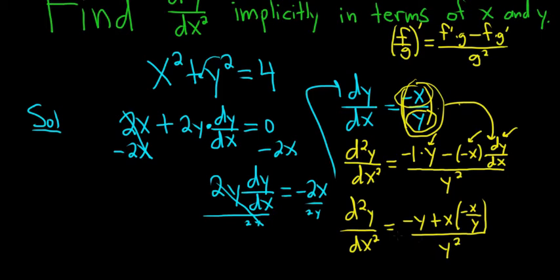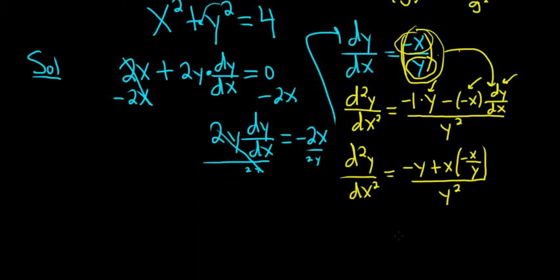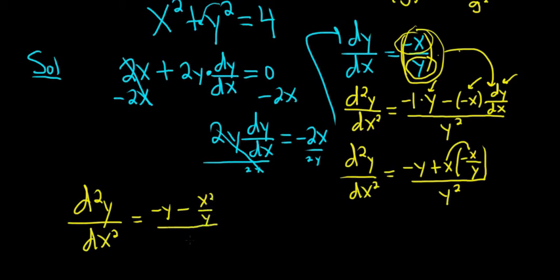Now all we have to do is simplify. The second derivative with respect to x is equal to negative y. x times x is x squared, so we get negative x squared over y all over y squared.